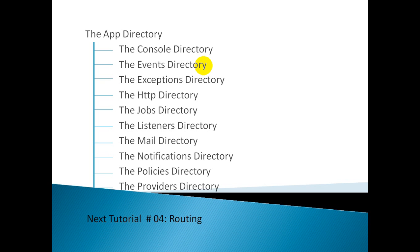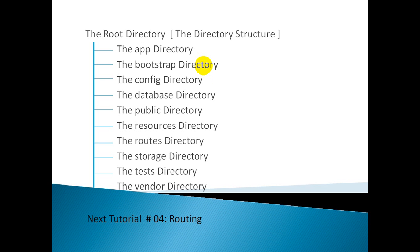Then comes the Policies directory, which contains the authorization policy classes for our application. This directory does not exist by default, but we can create it with the make:policy Artisan command. And the last one is the Providers directory, which contains all of the service providers for our application. So this is all about our directory and app directory.